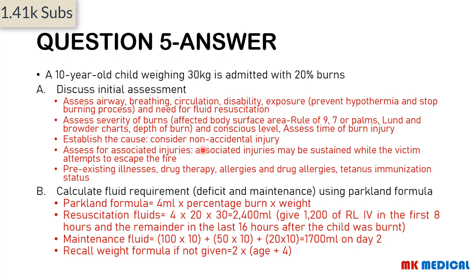Assess the affected body surface area using the rule of nines, rule of sevens, rule of palms, or Lund-Browder charts (most accurate). Assess depth of burns — superficial or deep. Assess level of consciousness using AVPU or Glasgow Coma Scale (Blantyre Coma Scale for younger children; for a 10-year-old, GCS is appropriate). Assess the time of burn injury, establish the cause, and consider whether this was non-accidental.